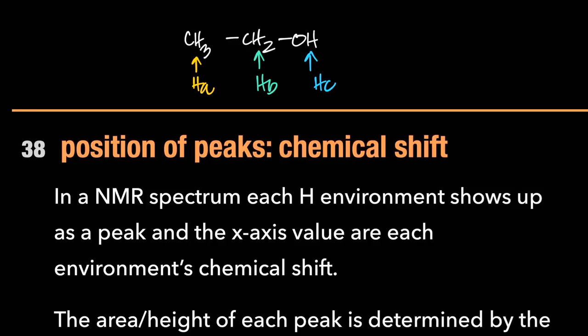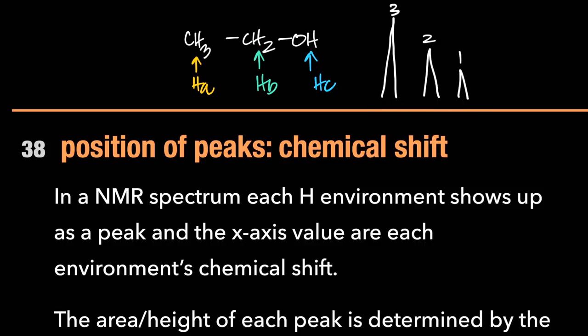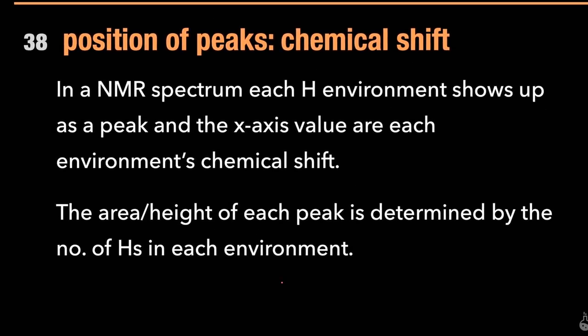We saw that yesterday. Today we're going to talk about where on the x-axis of the graph these peaks will occur. I'm going to get three signals: one will have a height of three, one will have a height of two, and one will have a height of one. The value on the x-axis is what we call the chemical shift. So the position of each peak depends on the chemical shift value.